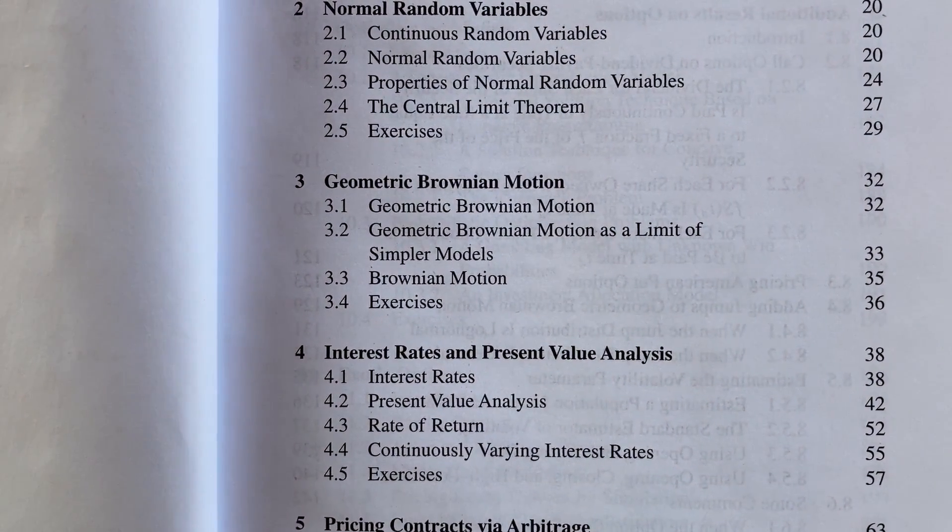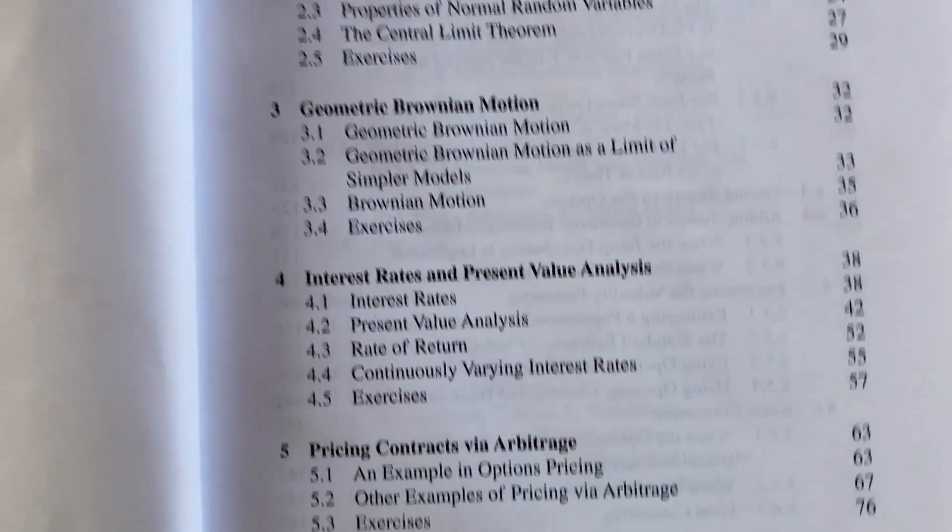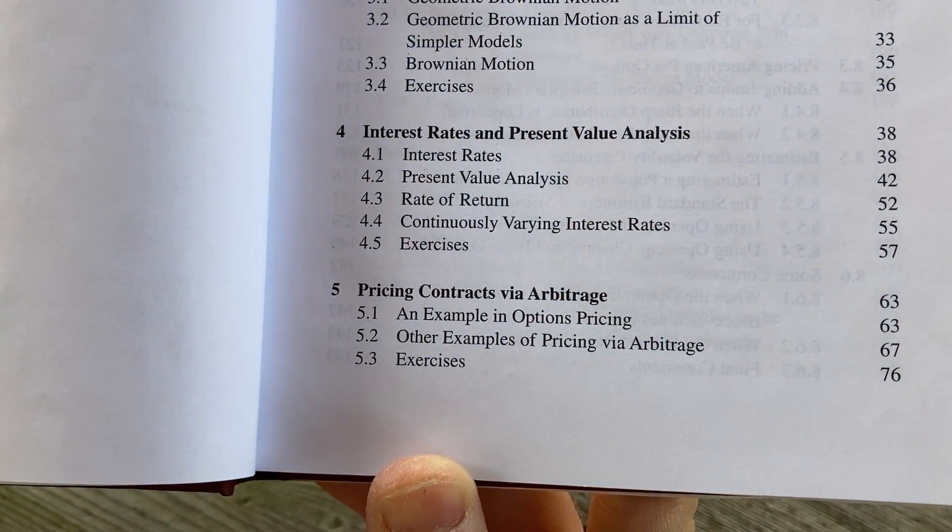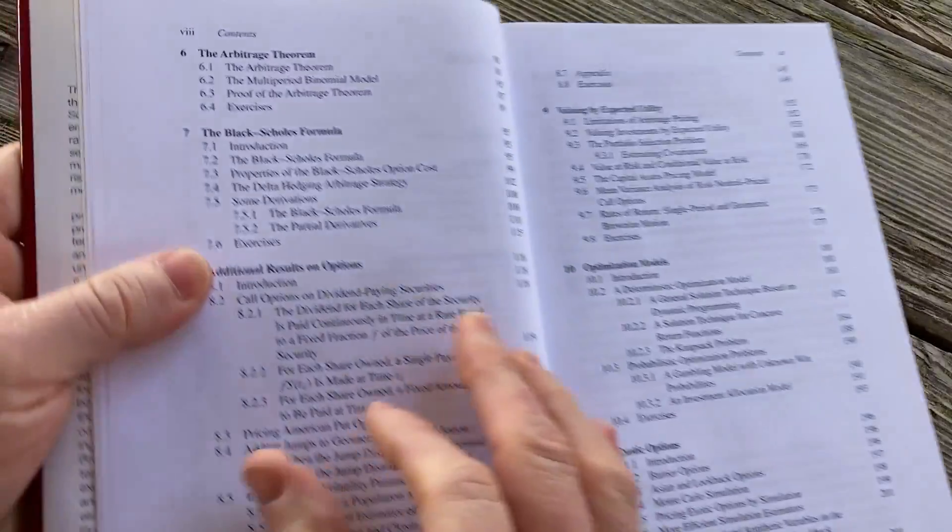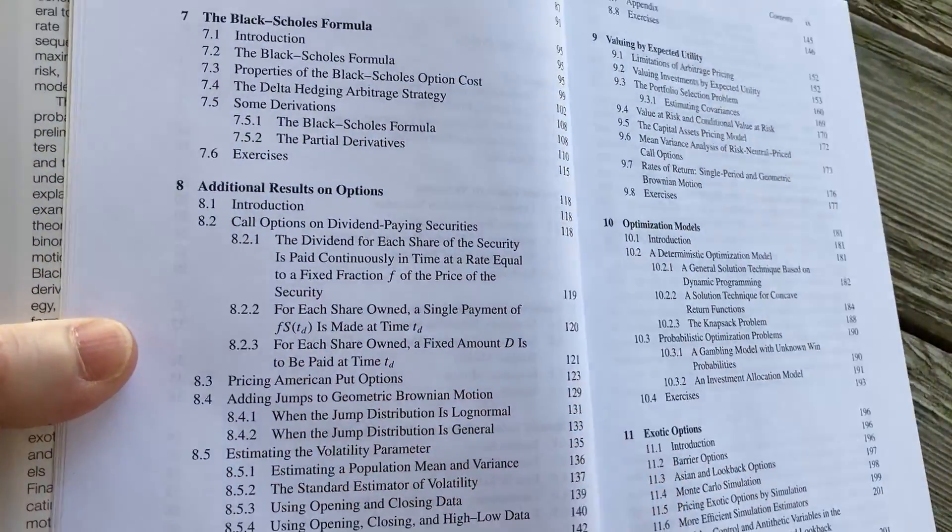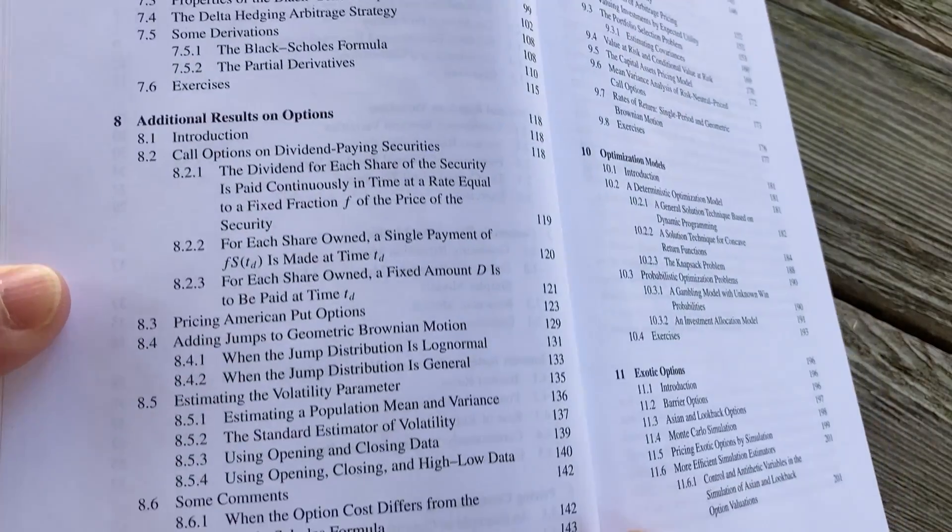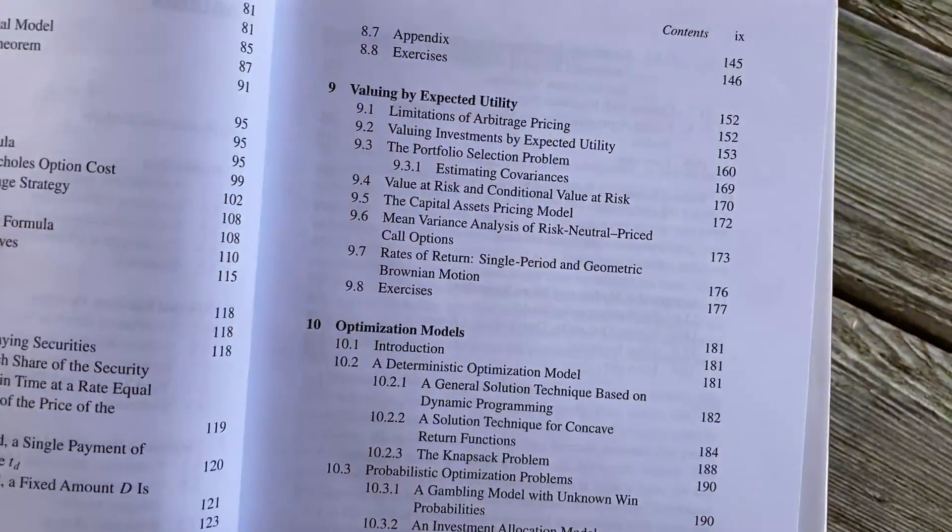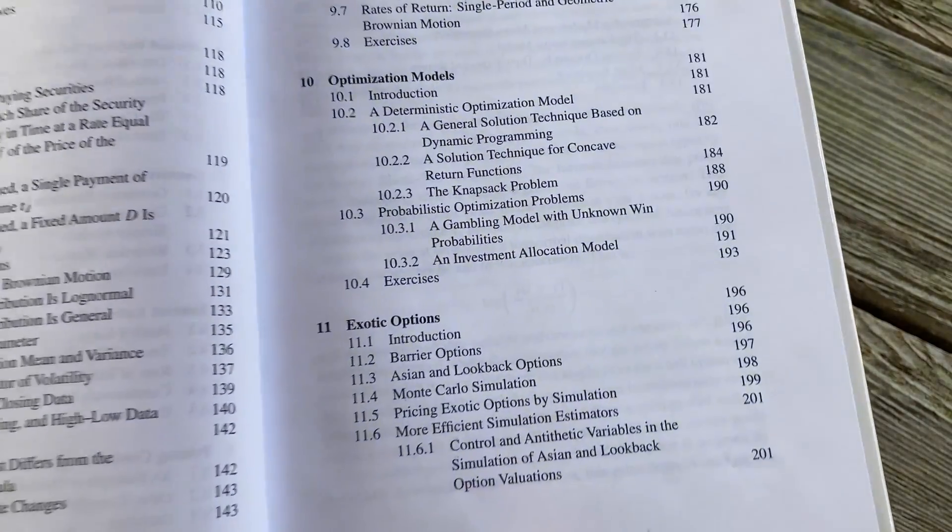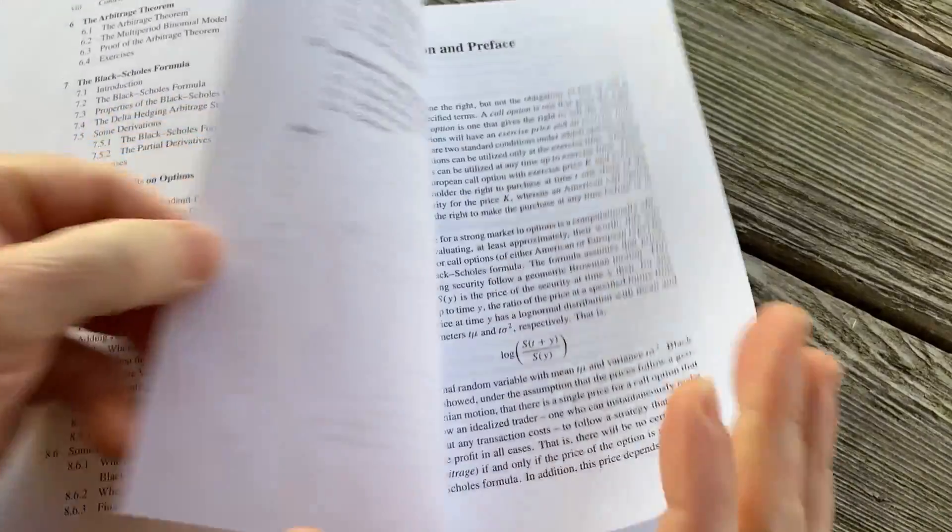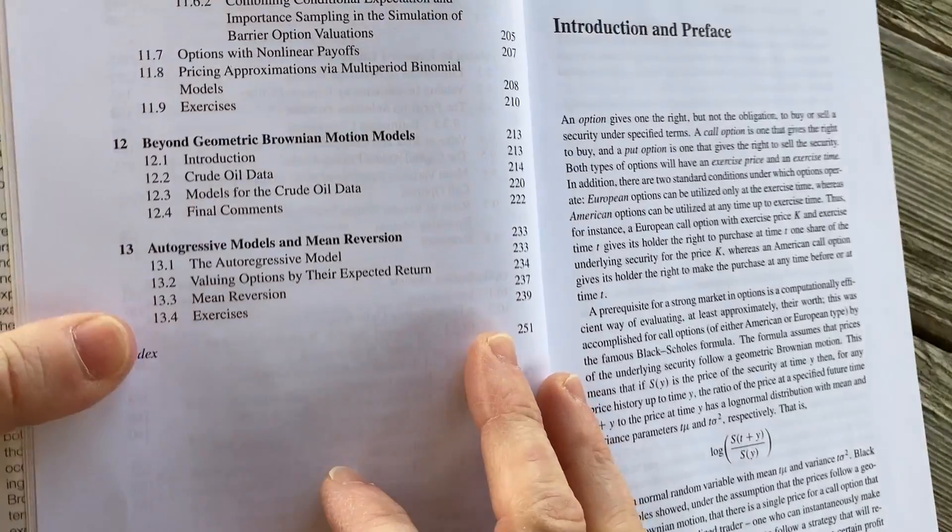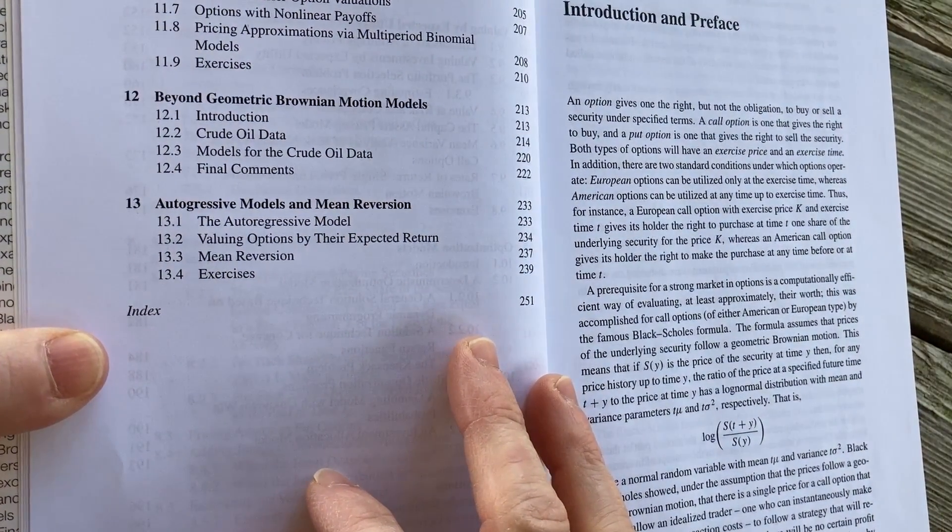Geometric Brownian motion. Interest rates and present value analysis. Pricing contracts via arbitrage. The arbitrage theorem. The Black-Scholes formula. Then we have some additional results on options. Valuing by expected utility. Optimization models. Exotic options. Beyond geometric Brownian motion models. Auto-regressive models and mean reversion.